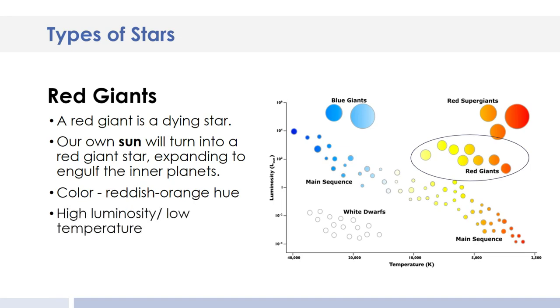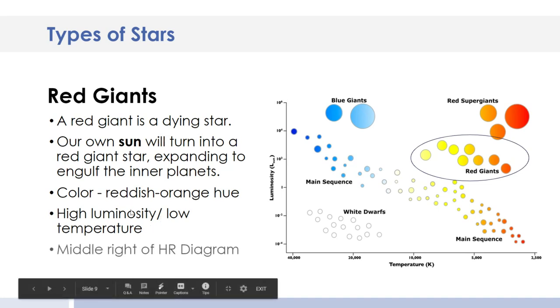A red giant is going to be reddish or orange. And it's high luminosity, meaning it's very bright or fairly bright. And it's low temperature. You can see it's over here in the low temperature range. So fill in, especially this last bullet, it's really important. And this bullet, they're in the middle right of the HR diagram. You can fill in your table right now.